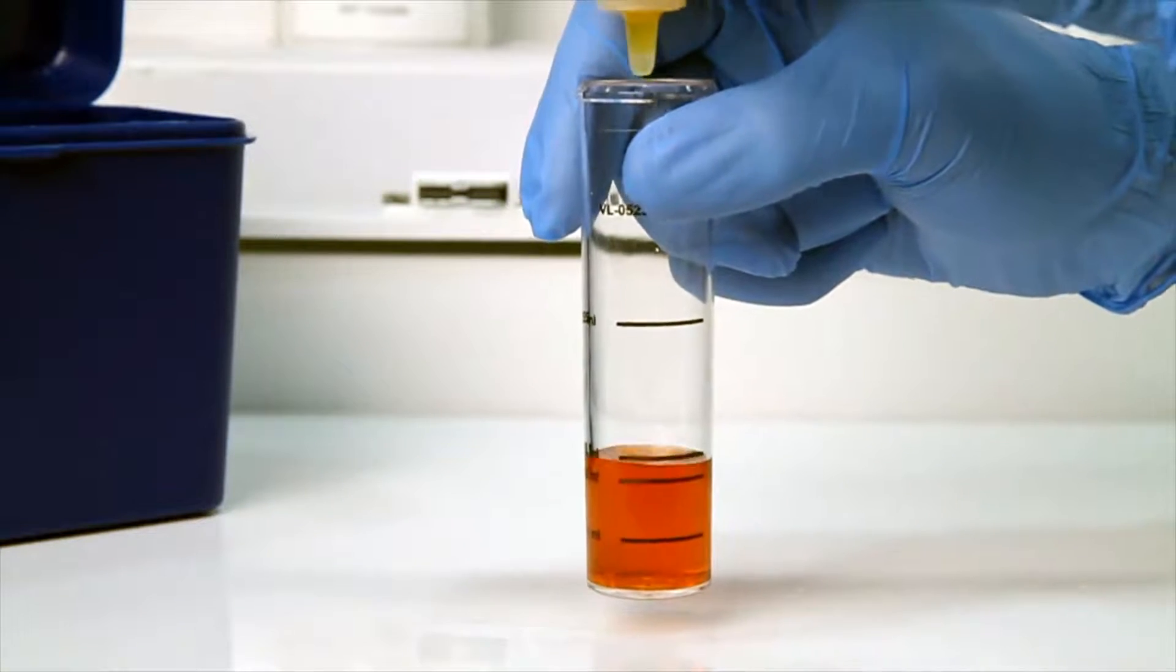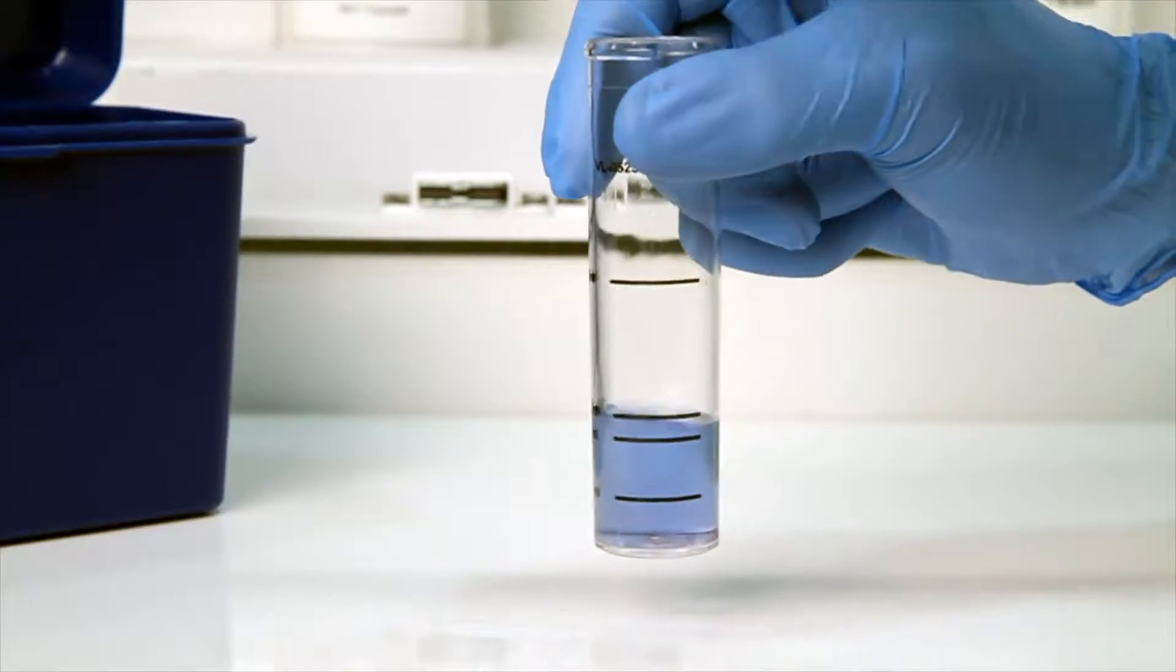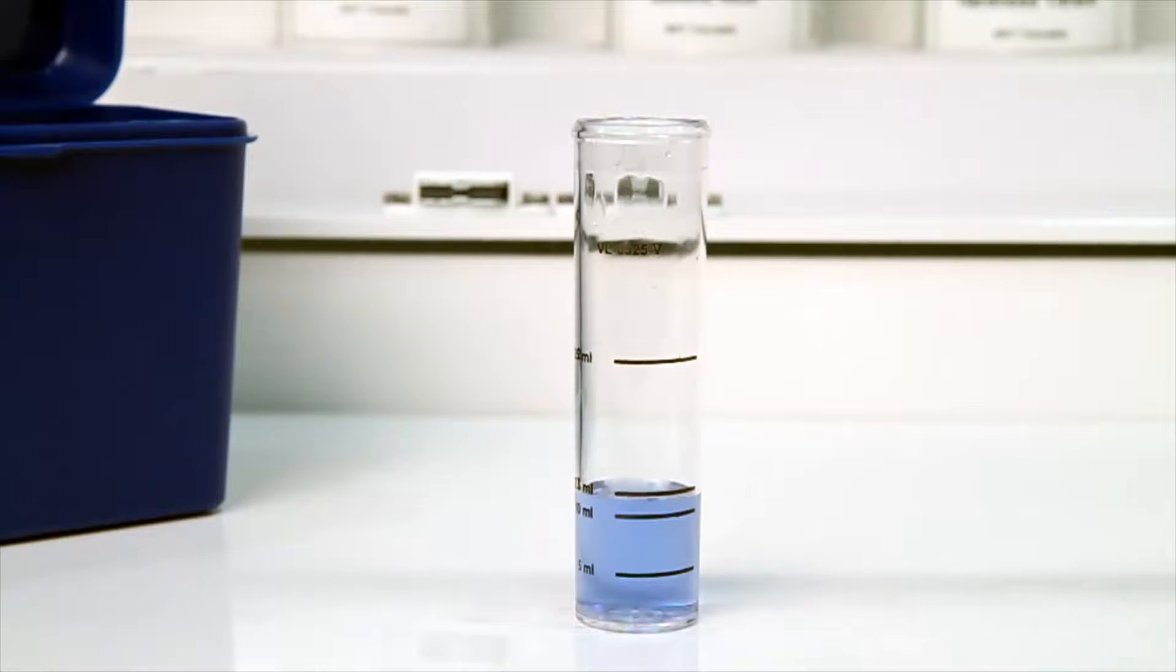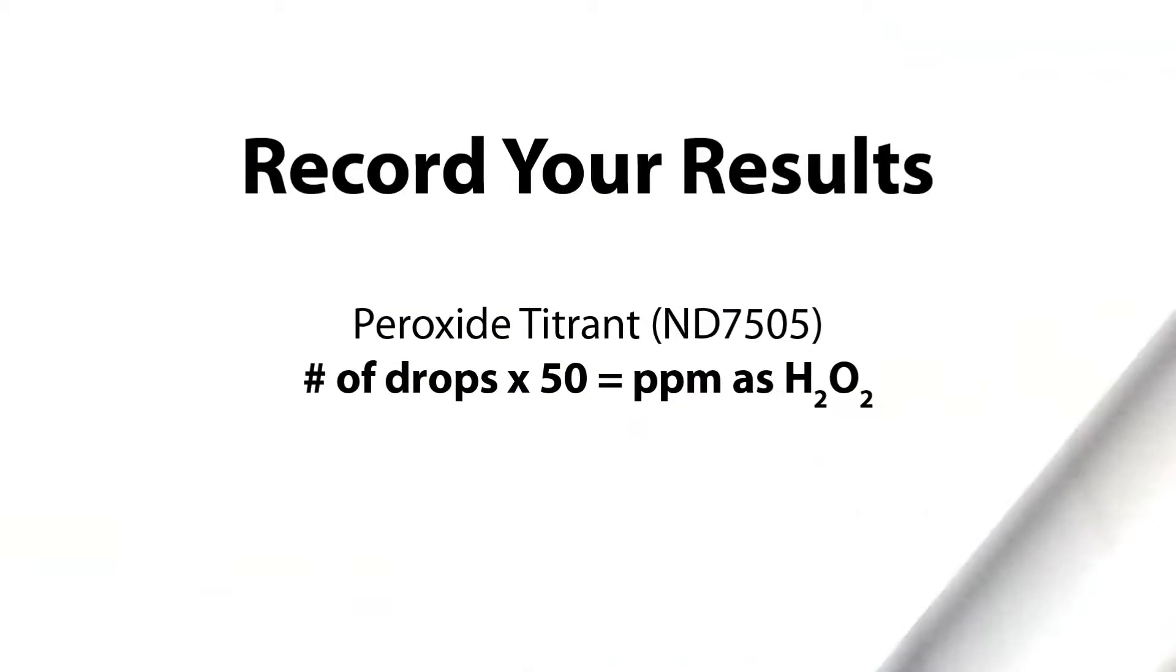The titration is complete when the sample changes from orange to blue. Multiply the number of drops by 50 to obtain the parts per million as hydrogen peroxide.